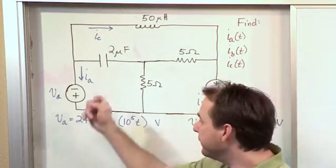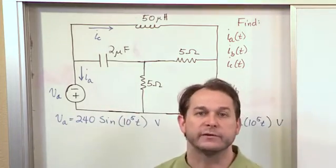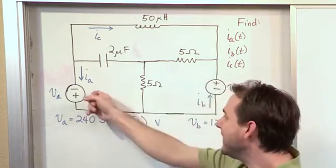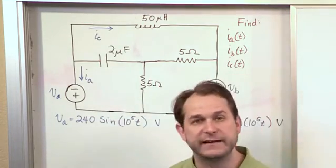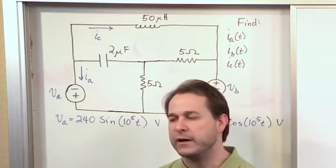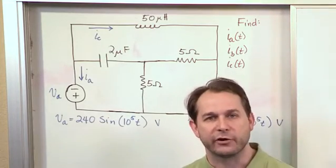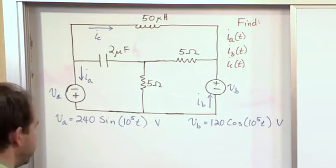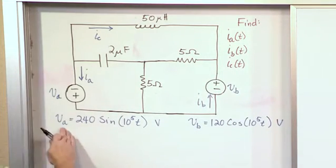So the bottom line is we want to convert all of this stuff to phasor notation. We want to find the impedances of everything that we need to find, so we have the circuit in terms of phasors and impedances. And then we want to write the three mesh equations because we have three meshes here. We want to solve for those mesh currents, and then once we get the mesh currents we'll relate them to IA, IB, and IC. And then finally convert back to the time domain. So you're putting everything together in terms of your mesh current skills.